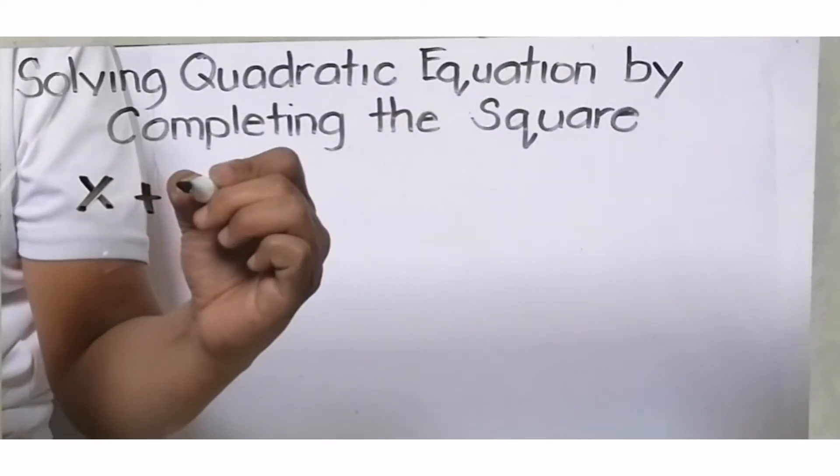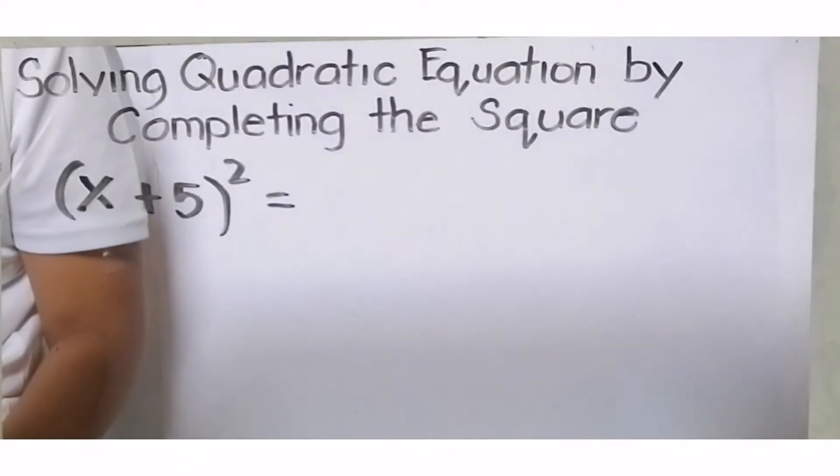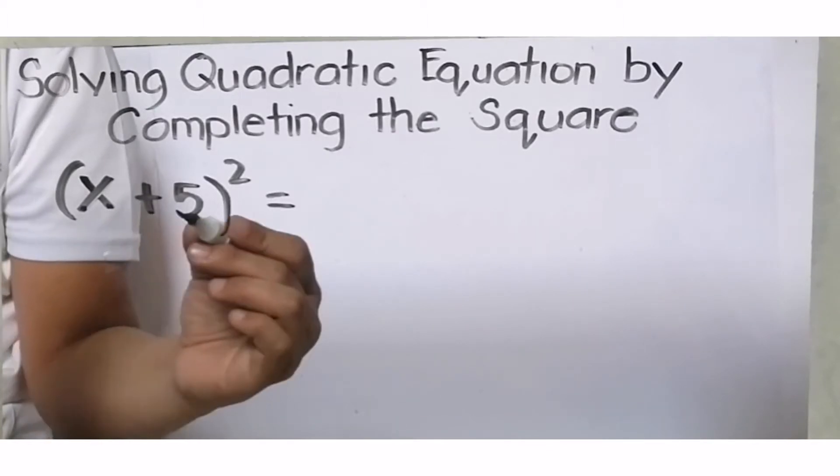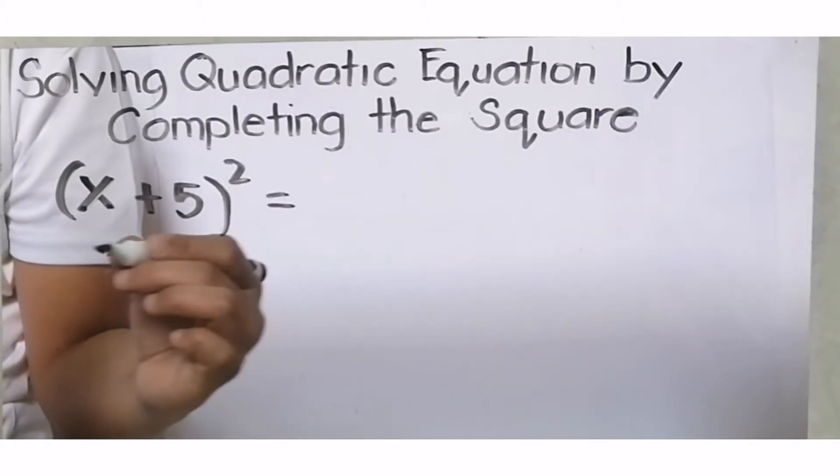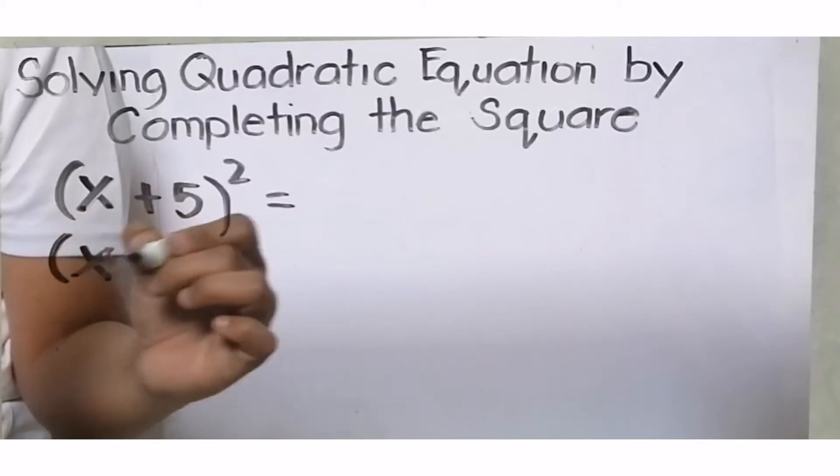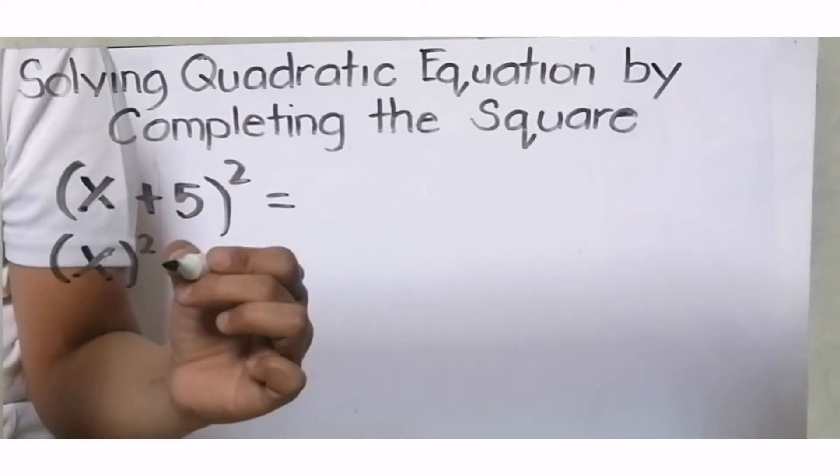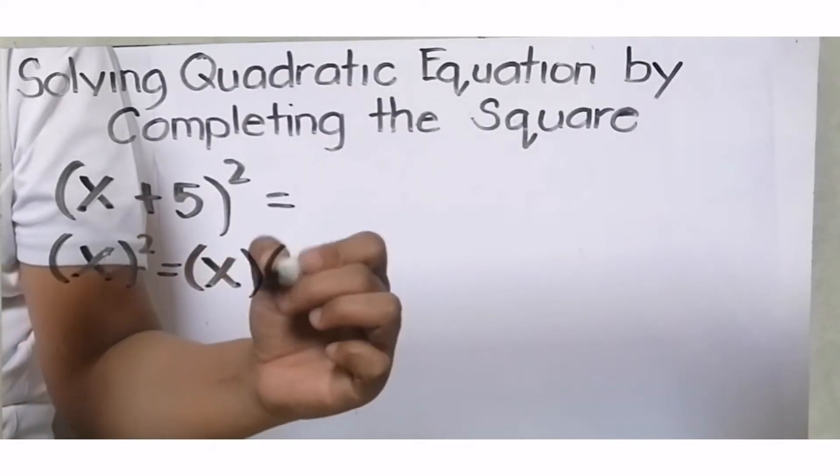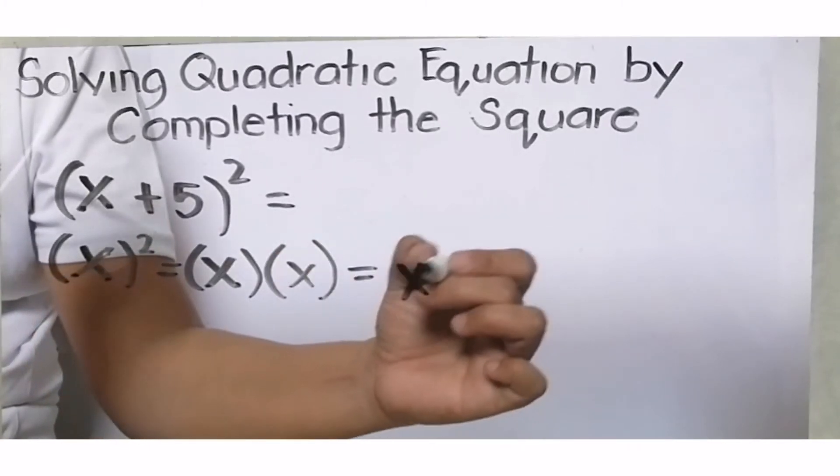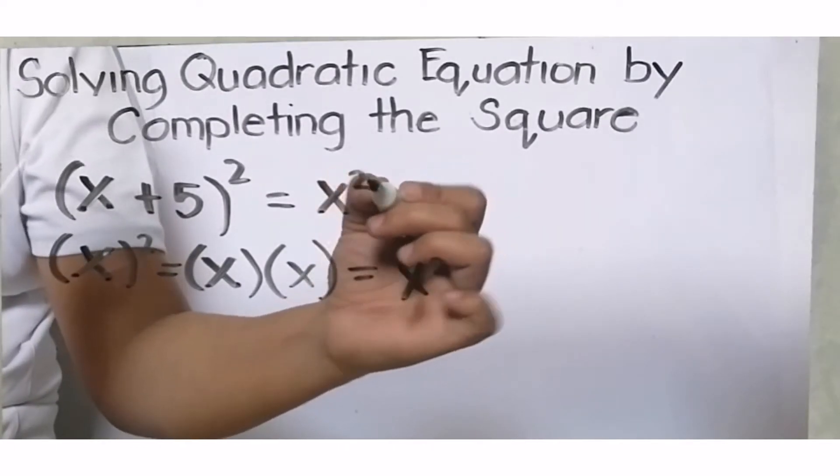Let's take for example the square of X plus 5. Let us follow the same step. First, identify our terms. Our first term is X, and our last term is positive 5. This is our X, our first term. Square the first term.